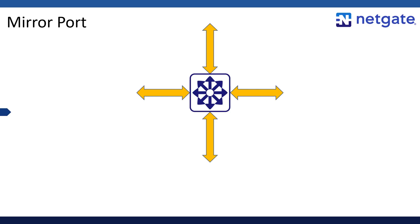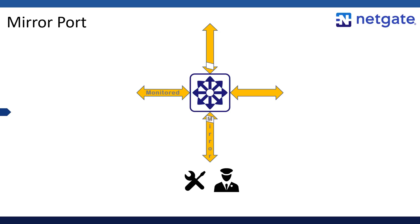Let's say you want to inspect that traffic for troubleshooting or security or whatever. It would be so much easier if you could examine the traffic as it passes through the switch, but if you slow the traffic down or interrupt it, the problem could get worse. That's where the mirror port comes in. You select the port to be monitored, select the port to which you want that traffic mirrored, and the switch makes a copy of all Ethernet frames that transit that port and sends them to the mirror port.